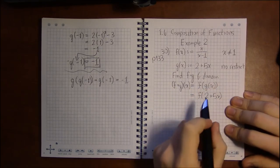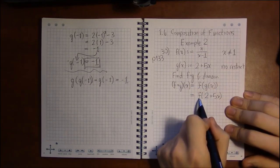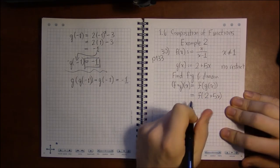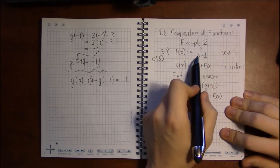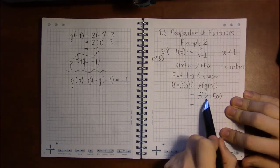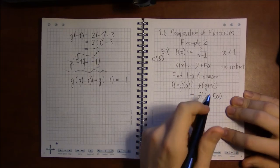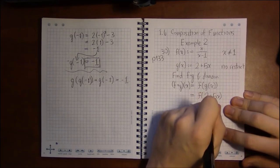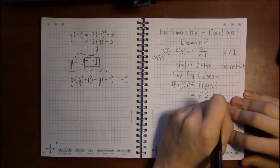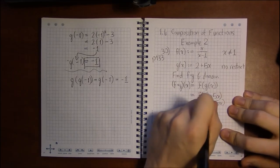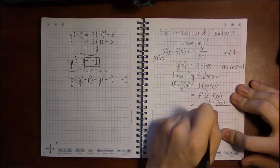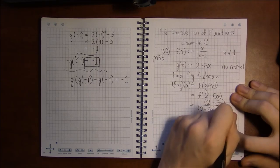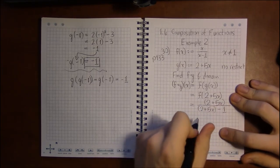Now we're looking at f of 2 plus 5x, so wherever we see x in the definition for f, we're going to replace every occurrence of x with 2 plus 5x. So there's one on the top that gets replaced with 2 plus 5x, and there's one more x on the bottom that needs to be replaced by 2 plus 5x.